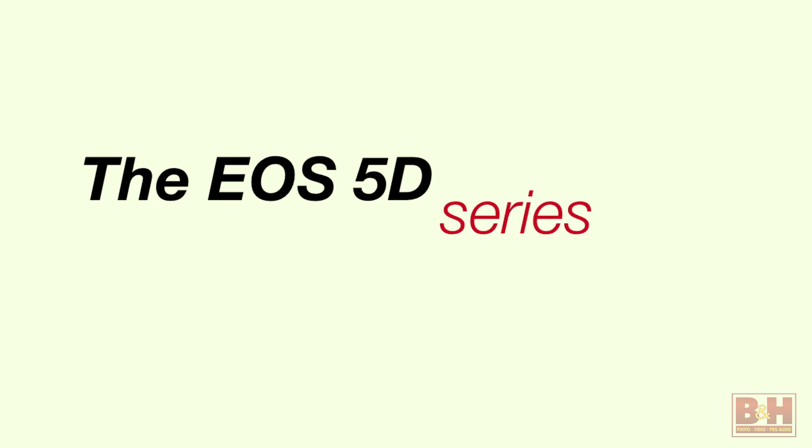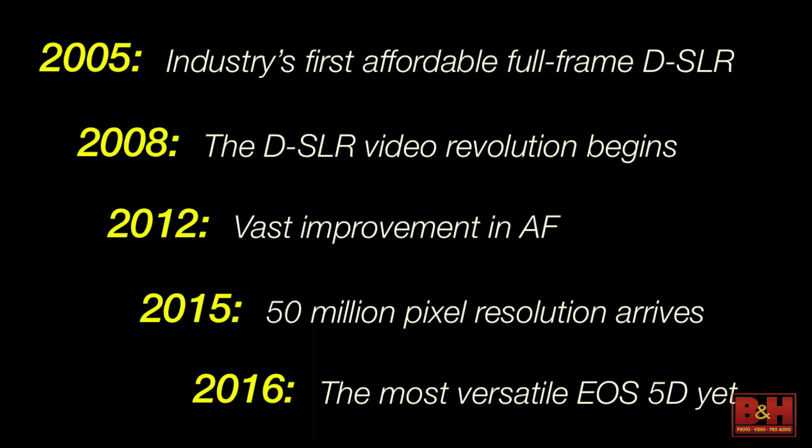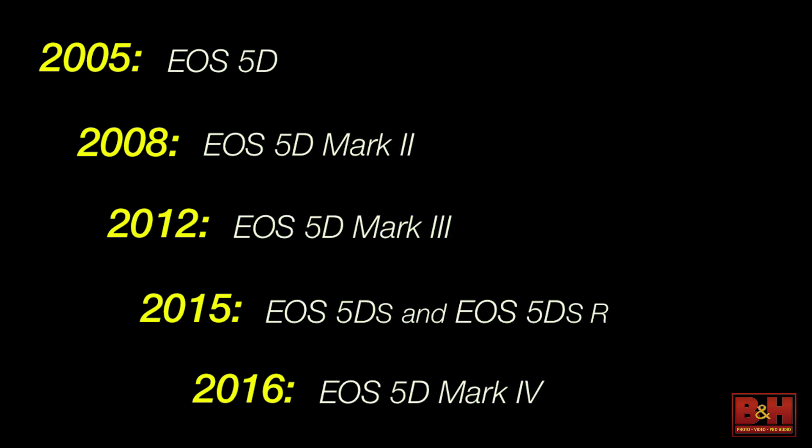We have 11 different models in the EOS system at present — obviously not every one is right for everybody. David struck an interesting chord talking about the history of the 5D series. The EOS 5D has become not just a flagship product for Canon, but a very important product in the history of digital SLR photography, from the first 5D in 2005 to where we are today.